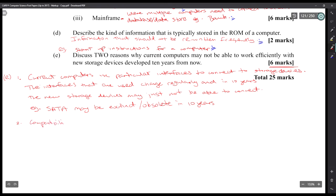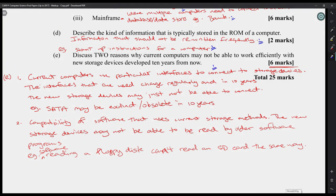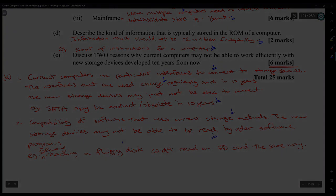Then you have the compatibility of software that uses current storage methods. So the new storage devices may not be able to be read by older software programs. For example, reading a floppy disk now. The question asks about storage devices, so the examples have to be about storage devices - how they connect, and compatibility. Like with a floppy disk, you won't be able to read it because you may not have a floppy drive, you may not have the ability to read magnetic media. That'll be a three-mark answer once you put the examples. The examples will sell it, because discussions always go well when you have examples. Alright, that should be good there for module one.